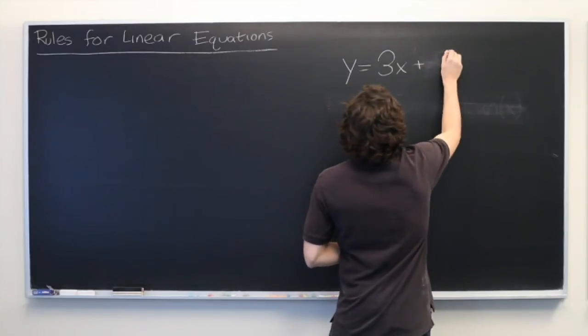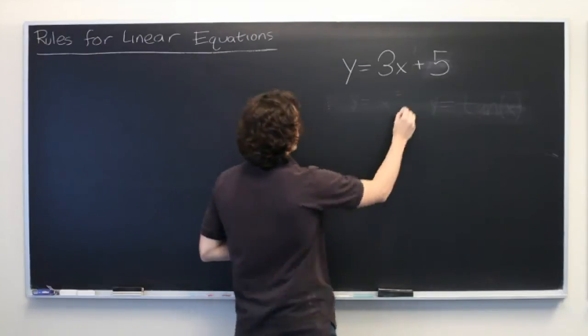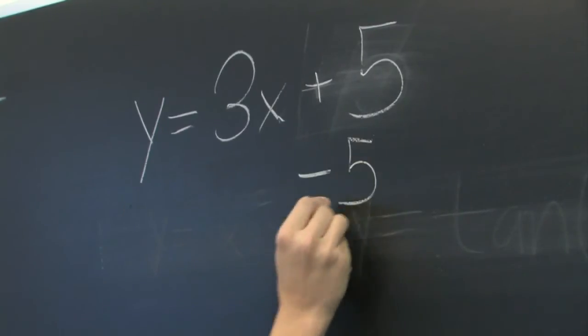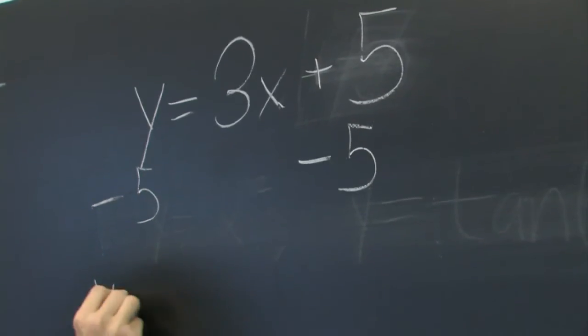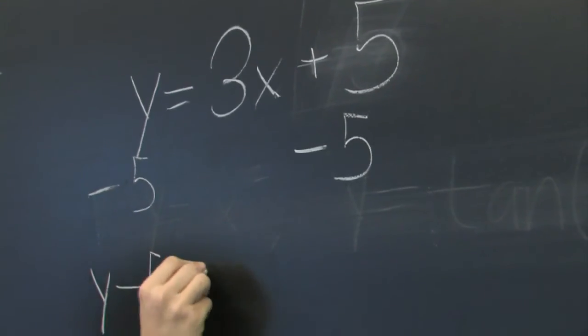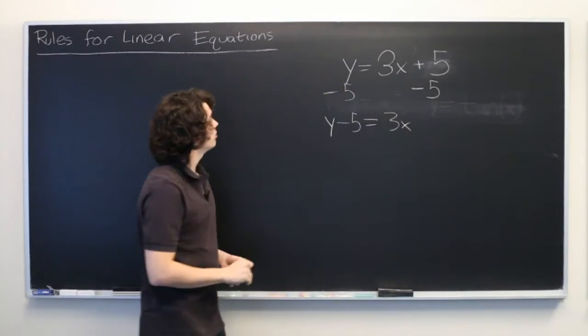You can, however, subtract 5 from both sides of the equation. Minus 5 minus 5, we get y minus 5 equals 3x. These two are the same equation.